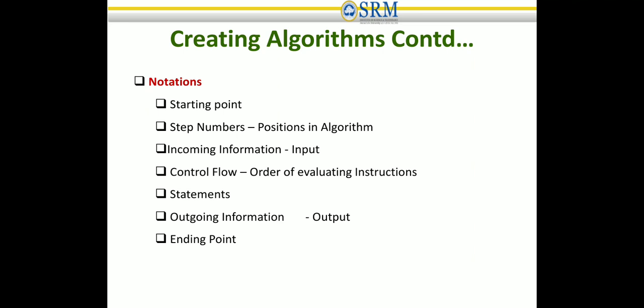An algorithm is said to be correct if, for every input instance, it halts with the correct output. We say that a correct algorithm solves the given computation problem. An incorrect algorithm might not halt at all on some input instances — it will keep executing the wrong solution. Or it might halt with an answer other than the desired one, resulting in an unexpected answer.